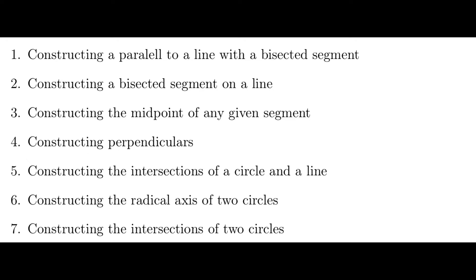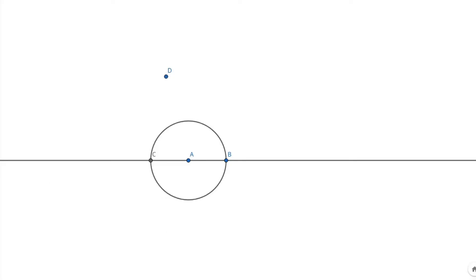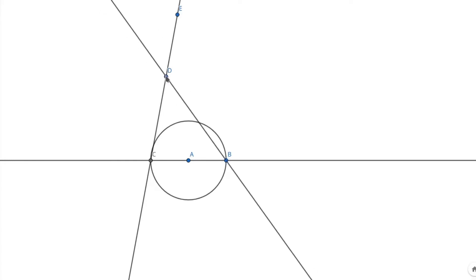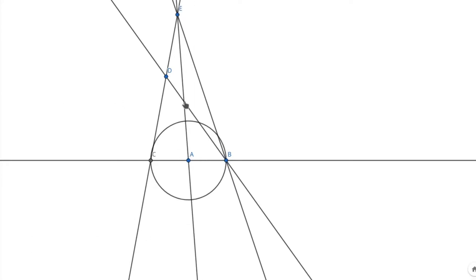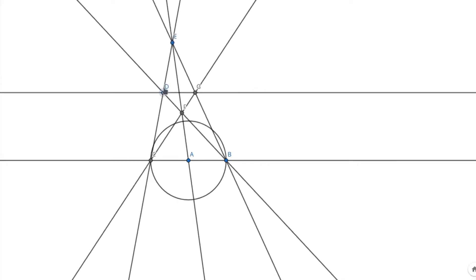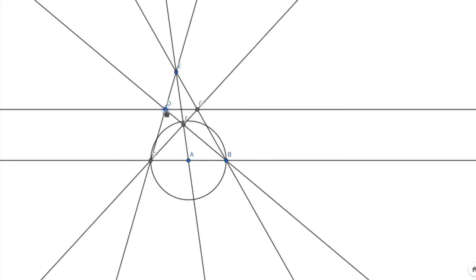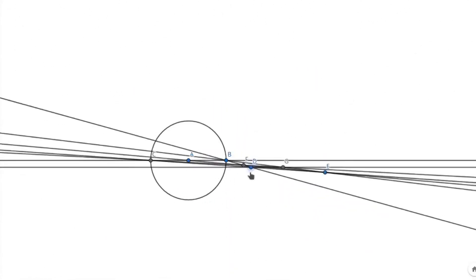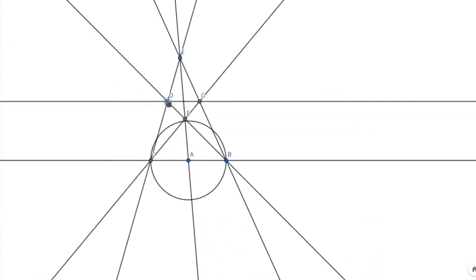We will see how to bisect any given segment later. We will do the construction as shown on screen. BG is the parallel line that we wanted to find. And as you can see, when we move any of the points around, DG still ends up being parallel to the original line.